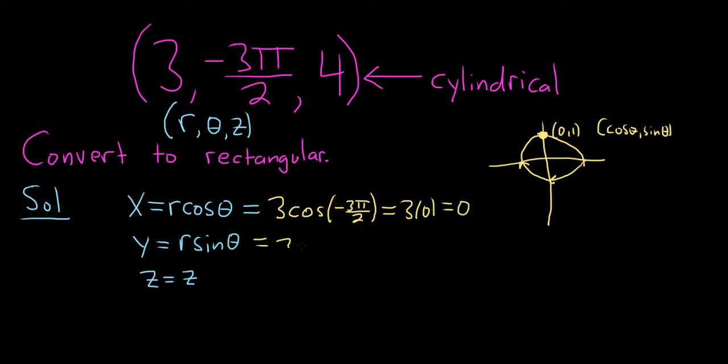This will be r so 3 and then sine of negative 3 pi over 2. This is really convenient because we can use our picture. You see sine is the y coordinate here at negative 3 pi over 2 and that's 1. So this is 3 times 1 which is 3, and the best part is that z is just equal to 4.